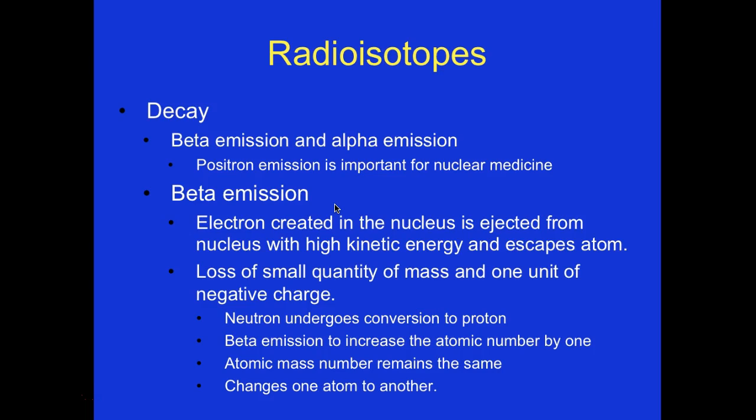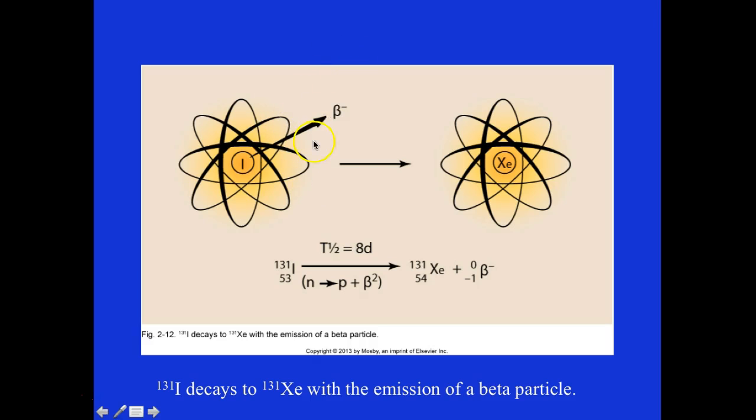With beta emissions, an electron is created in the nucleus and ejected from it with high energy, escaping the atom. There is a loss of a small quantity of mass and one unit of negative charge. The neutron undergoes conversion to a proton. Beta emission increases the atomic number by one; the atomic mass number remains the same, changing one atom to another. You can see the beta coming off and changing the actual element.